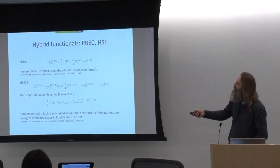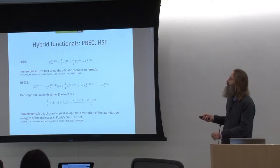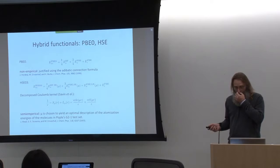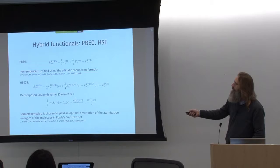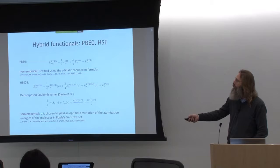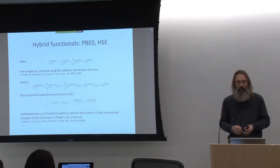Another very popular functional is called HSE, or HSE03 or HSE06 — there are a few varieties. It is essentially a quarter of the short-range component of Fock exchange, three quarters of the short-range component of PBE exchange, the complete long-range component of PBE exchange, and PBE correlation. The 1/R operator in the exchange has been decomposed into a short-range part and a long-range part by means of an error function. The range at which this separation is done is controlled by a semi-empirical parameter fitted to atomization energies for a test set of molecules.